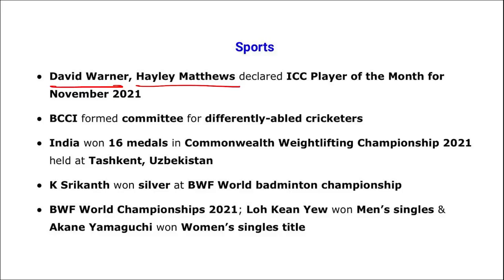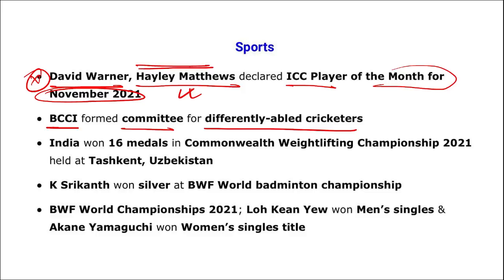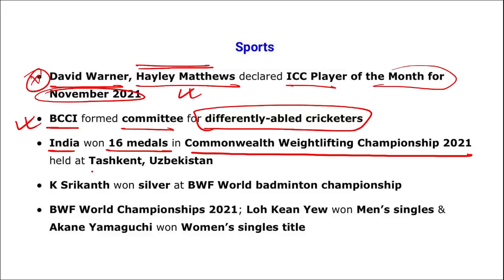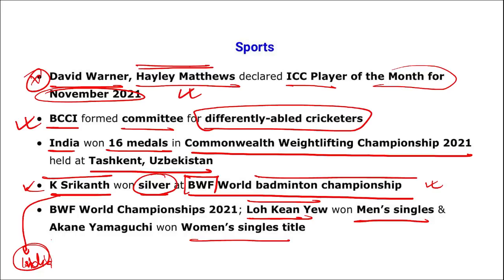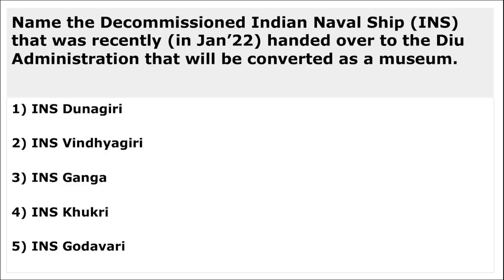In sports: David Warner and Hayley Matthews were declared ICC Players of the Month for November. BCCI formed a committee for differently-abled cricketers. India won 16 medals at the Commonwealth Weightlifting Championship 2021 held at Tashkent, Uzbekistan. K. Srikanth won silver at the BWF World Badminton Championship. Loh Kean Yew won gold, making Srikanth the first Indian to win silver at this championship. Akane Yamaguchi won gold in women's singles.